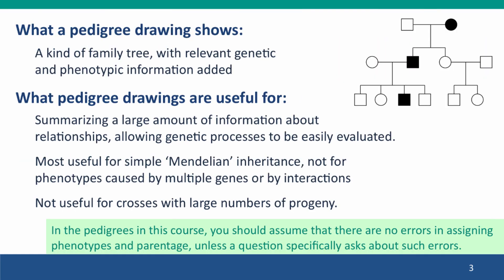A pedigree drawing shows a kind of family tree, but it has relevant genetic and phenotypic information added. This is an example of a pedigree drawing. They're useful for summarizing large amounts of information about relationships and about the phenotypes of the people in these relationships, and this information allows genetic processes to be evaluated much more easily than if the problem was simply presented in a paragraph of words. They're most useful for what's called simple Mendelian inheritance, for genes that are autosomal or sex-linked that have clearly dominant or recessive alleles.